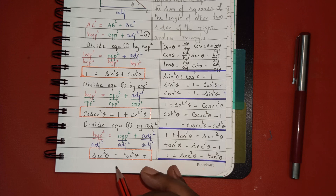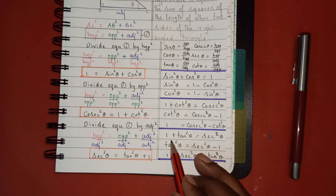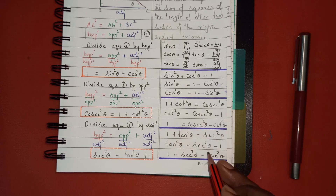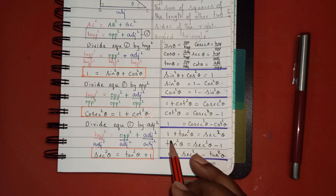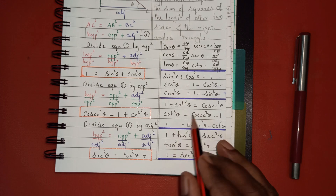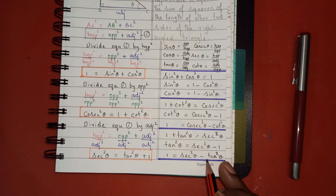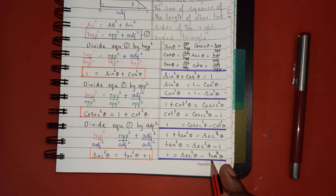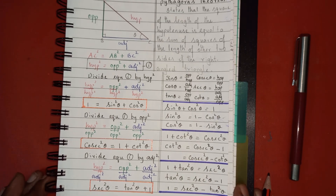From the third identity, 1 + tan²θ = sec²θ: if I want only tan²θ, I rearrange to get tan²θ = sec²θ − 1. If I want only 1, I rearrange to get 1 = sec²θ − tan²θ. That is all about trigonometric identities. Thanks for watching.